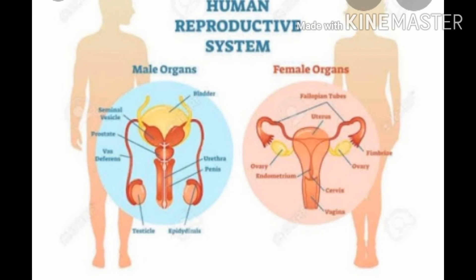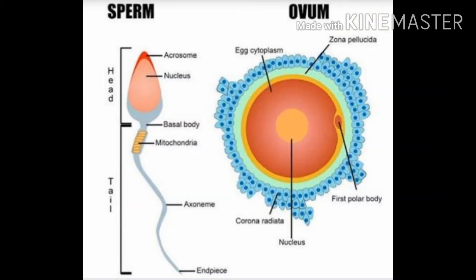Now that you are in class 10, you should be able to define reproduction and you should also know that reproduction is of two types: sexual and asexual. Reproduction is the formation of new individuals by sexual or asexual means which can repeat the process in their own turn. Asexual means is like in amoeba by the process of fission, just dividing the cell into two parts. Sexual means is like in humans by production of gametes, which are actually sex cells.